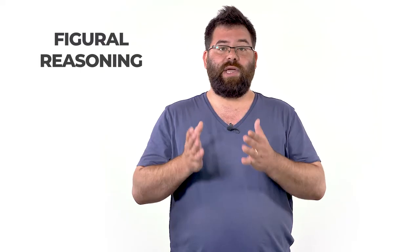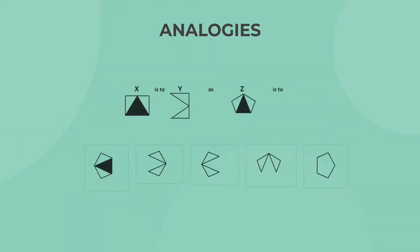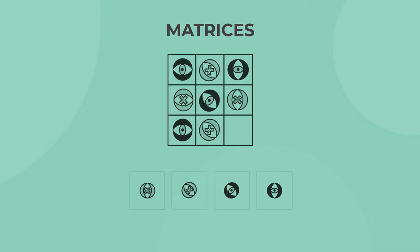The main goal of the cognitive section is to assess your ability to draw general rules from particular cases. The test uses two types of questions. The first is figural reasoning questions — questions dealing with shapes and patterns. These include mostly series questions, in which you will be asked to complete the missing shape according to a certain pattern; analogies questions, in which you need to find the relations between different shapes; and matrices, in which you are required to complete the missing shape in a matrix.